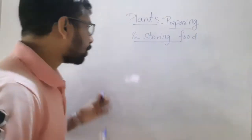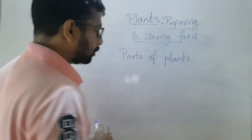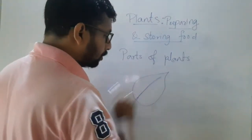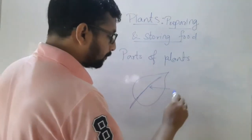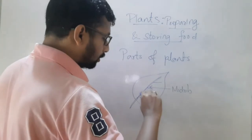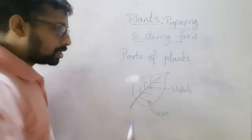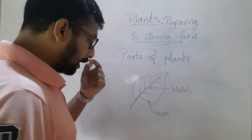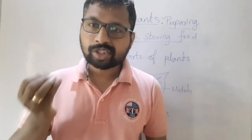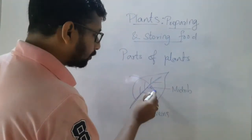Talking about parts of plants — if this is a leaf, in the middle there is one vein called the midrib. Along the sides of the midrib there are other veins. Also, if you magnify a certain section of the leaf, you will find small or tiny pores in it. These tiny pores are called stomata.